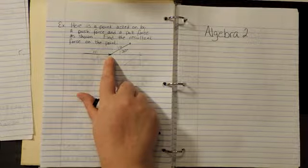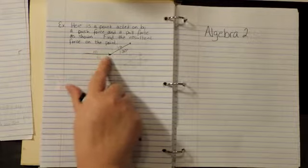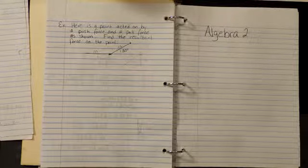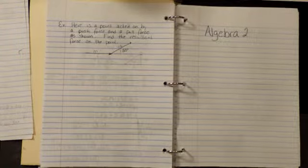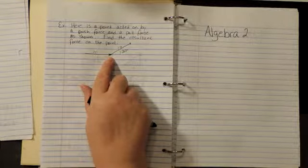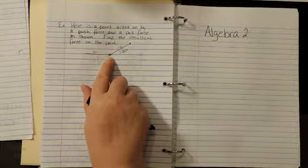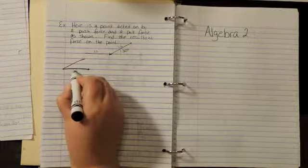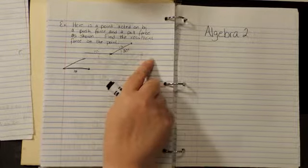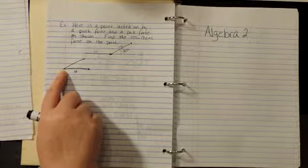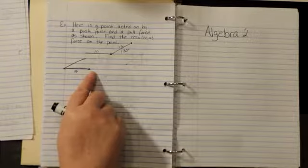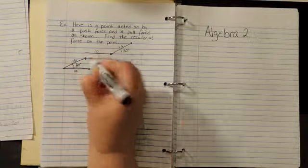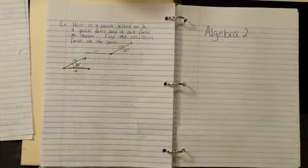Here's a point acted on by a push force and a pull force as shown. Find the resultant force on the point. Our point can't tell the difference between a push force and a pull force. So to make life a little simpler, we could rewrite this like this. This is our force pushing it this way. It's a push force, but our point doesn't know it's being pushed. It just knows that it's being moved that way. And this is 16, and this is 30 degrees.